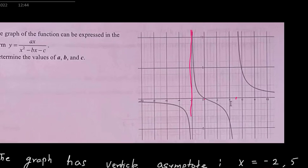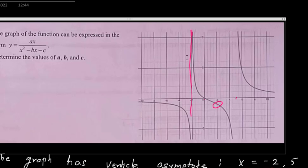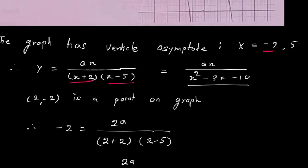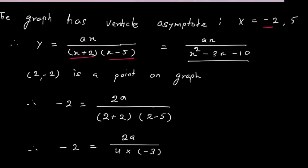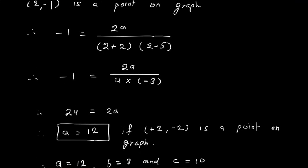To get the value of a, I will identify one point on this graph. I initially thought it was (2, -2), but looking more carefully — 1, 2, 3, 4, 5 — it is actually (2, -1). So this value is -1. I will replace x with 2 and y with -1.